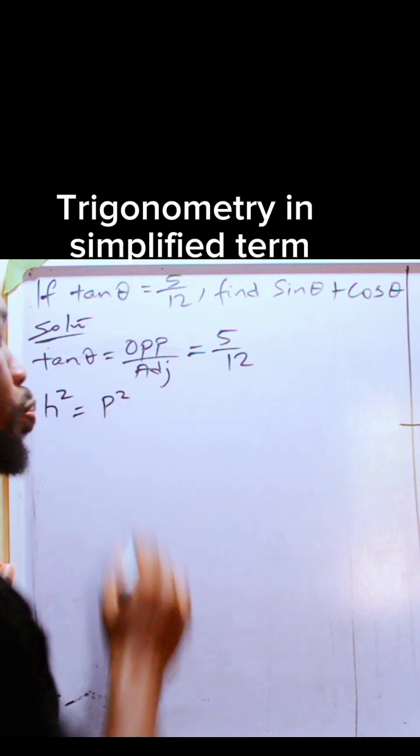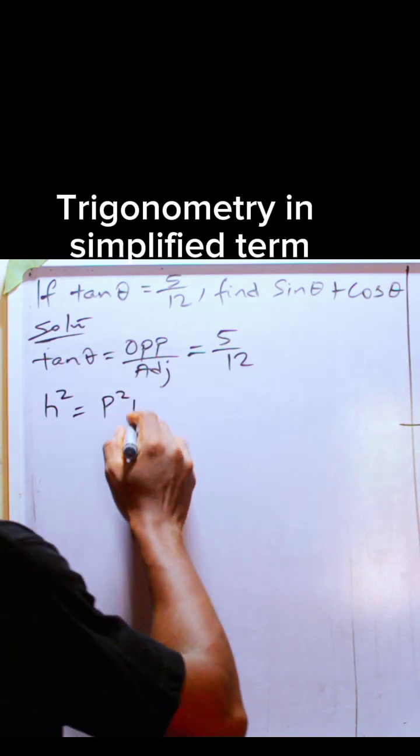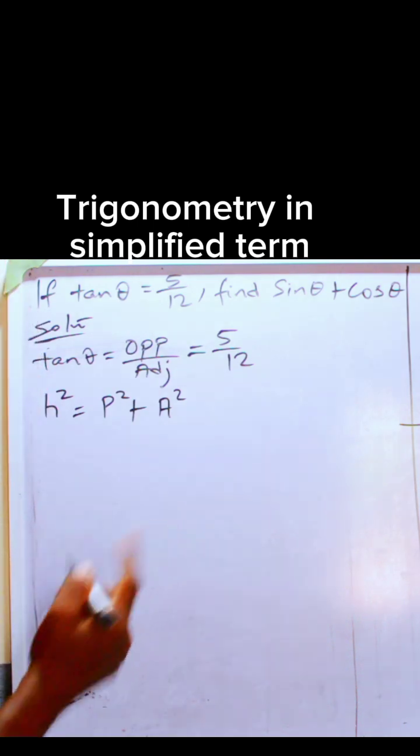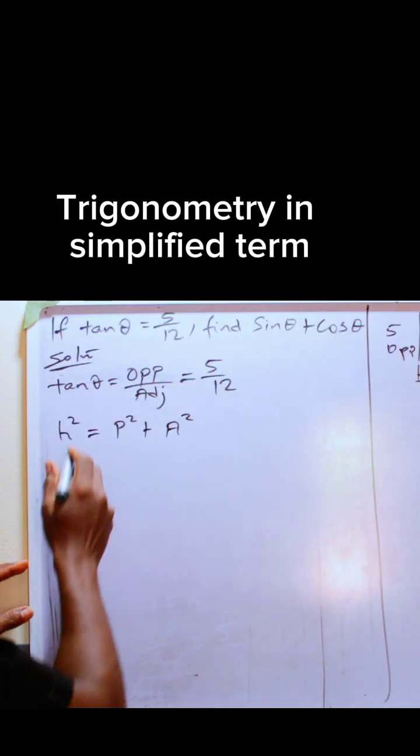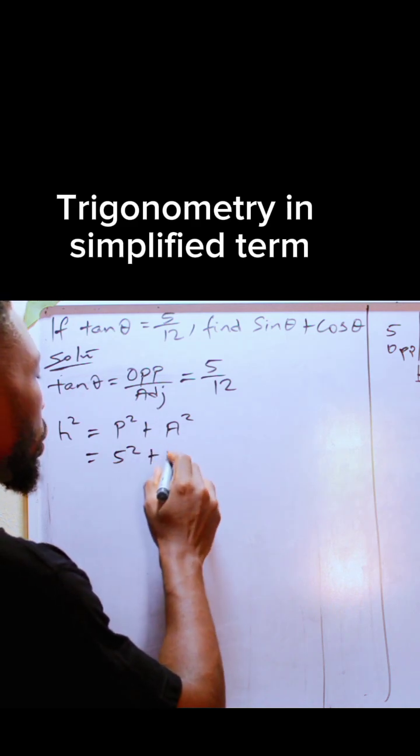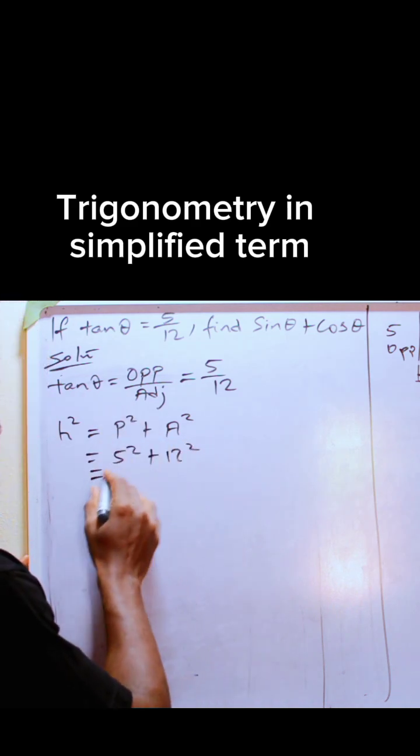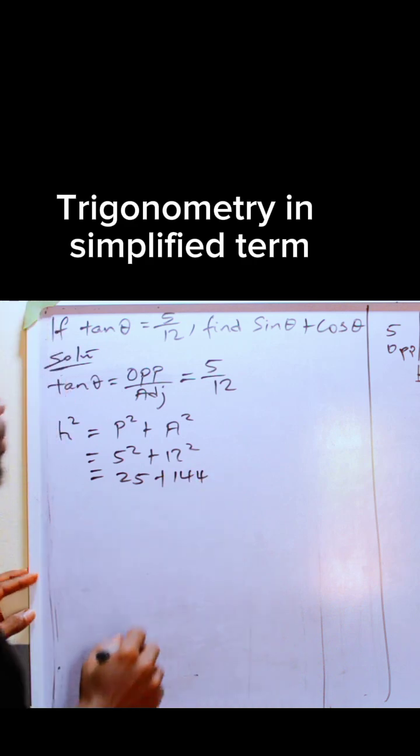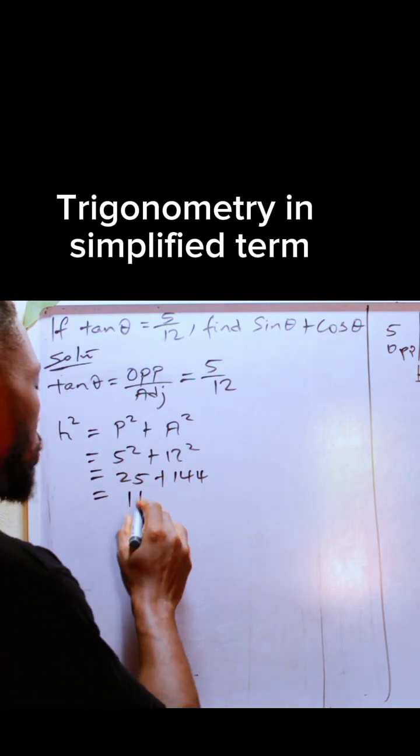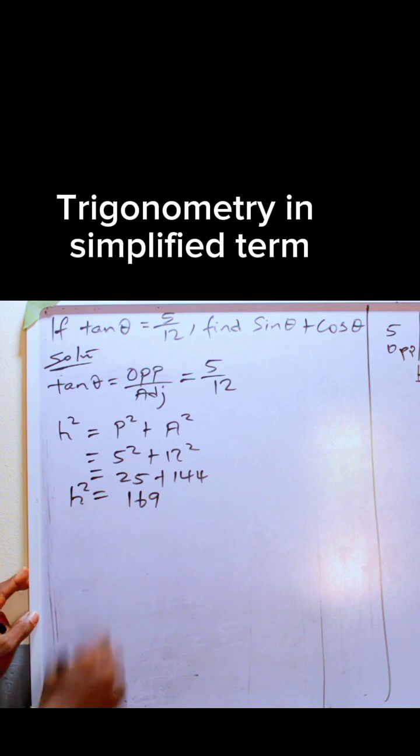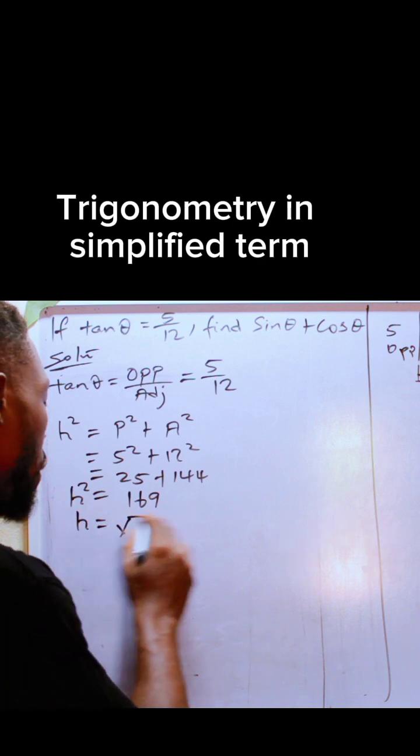Let me use p as the opposite and a for adjacent. So substituting, we have h² = 5² + 12². 5 squared is 25, 12 squared is 144. If you add the two of them, you have 169.